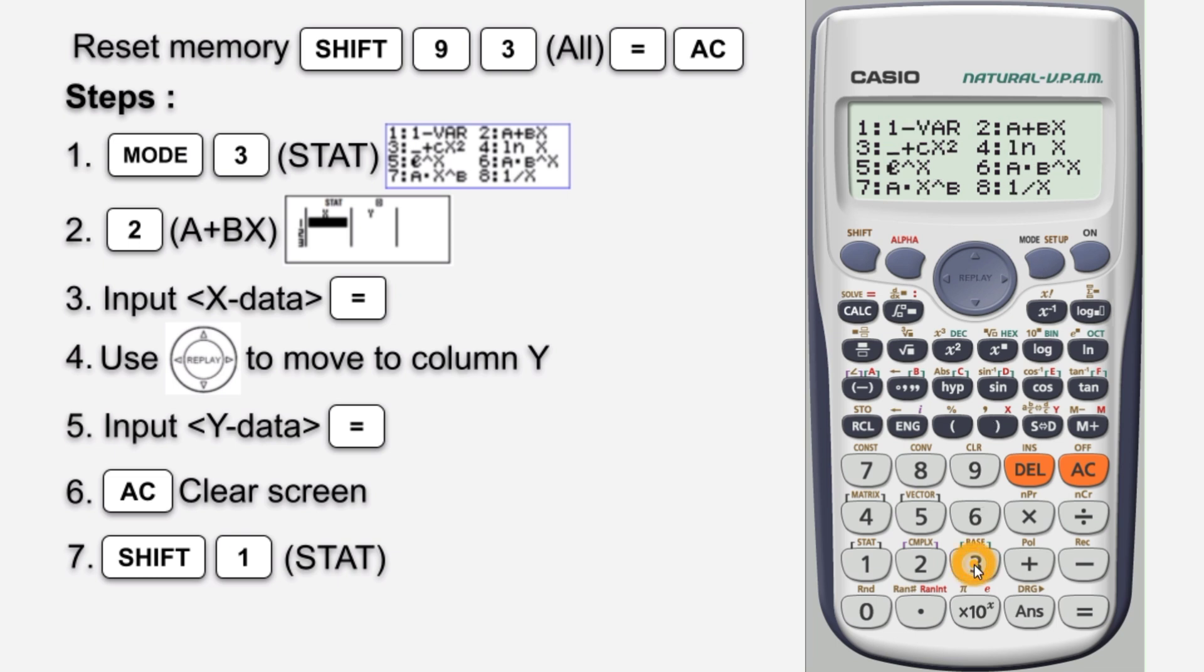For statistic, second step press 2 for linear regression. Then you come out with this screen.